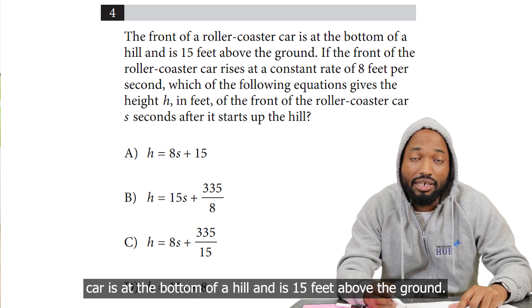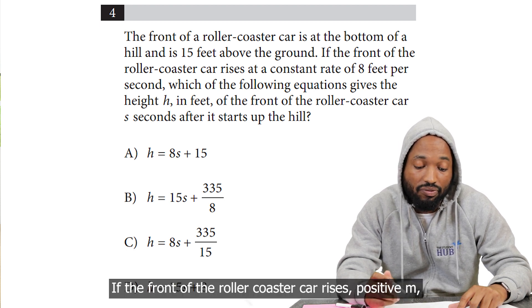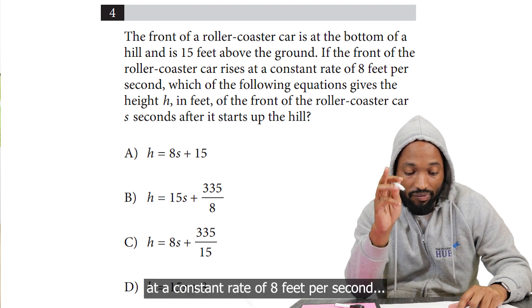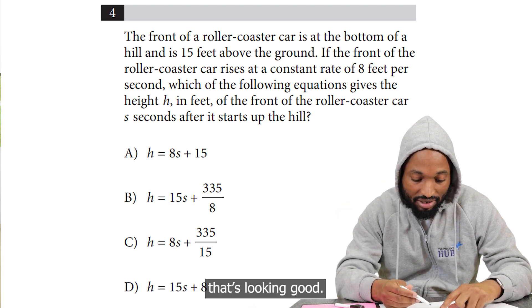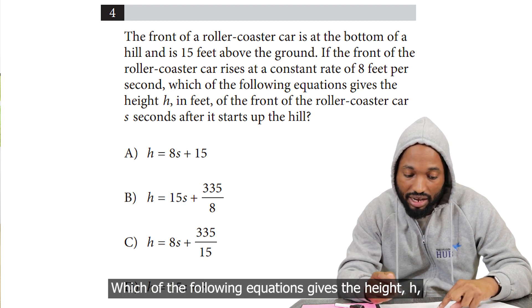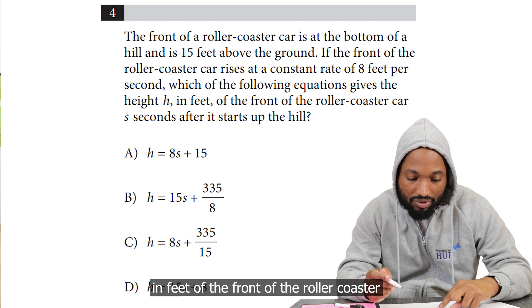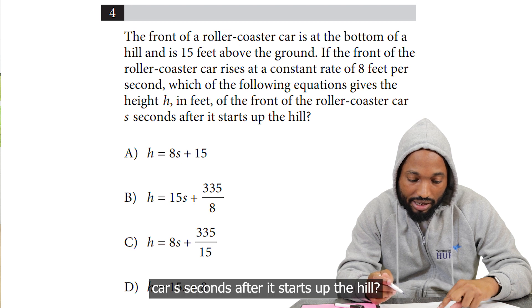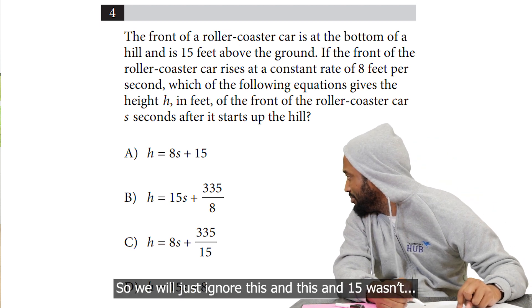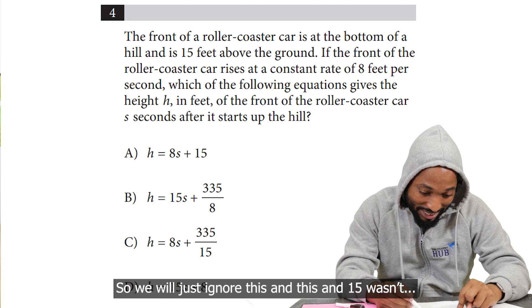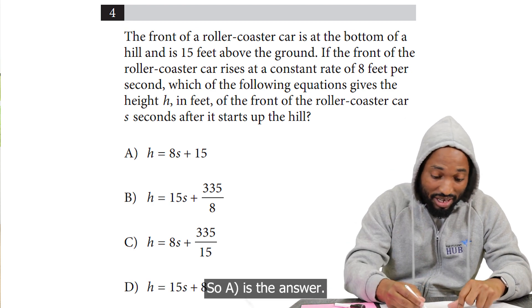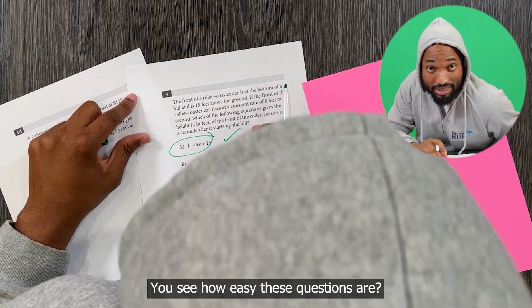Let's do two more before this video ends. Number four: the front of a roller coaster car is at the bottom of a hill and is 15 feet above the ground. If the front of the roller coaster car rises (positive m) at a constant rate of 8 feet per second... A and C done, looking good already. Which of the following equations gives the height h in feet of the front of the roller coaster car s seconds after it starts up the hill? We can just ignore this and this, and 15 feet above the ground, so that's the starting value. So A is the end.